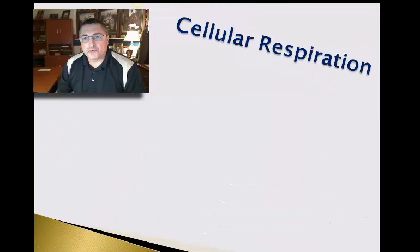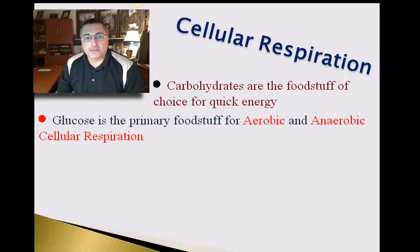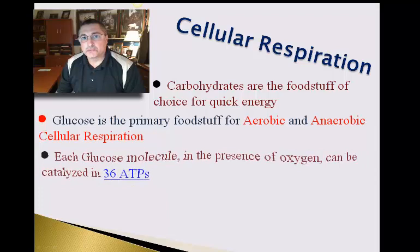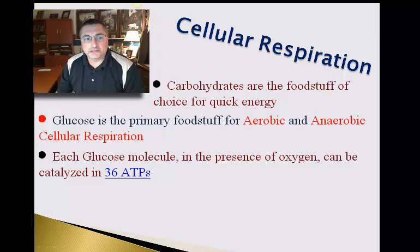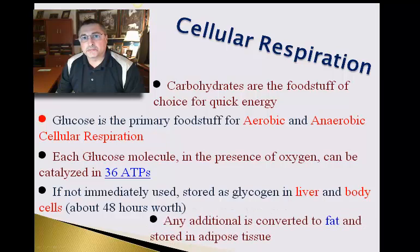Glucose is most prominently used in cellular respiration. Carbohydrates are the foodstuff of choice for quick energy, and glucose is the primary fuel for both aerobic and anaerobic cellular respiration. Each glucose molecule broken down aerobically in the presence of oxygen can generate up to 36 ATPs. If not immediately used, glucose is stored in the liver and body cells as glycogen. When glycogen storage is full, excess carbohydrates and simple sugars are stored as fat in adipose tissue — meaning most body fat comes from consuming too many simple sugars, not from consuming fat itself.